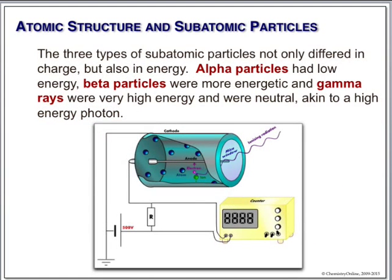We measure radiation with a Geiger counter. It consists of a tube with an anode in the middle and a high voltage between the inside of the tube and a little wire. When an ionizing particle comes through the little window, it releases electrons from the gas inside. That ionized gas causes a spark to jump from one side to the other, and when that happens you hear a little bleep. This is picking up mostly gamma rays from outer space.